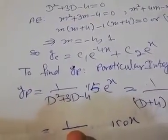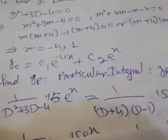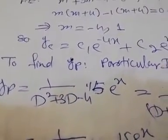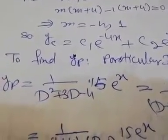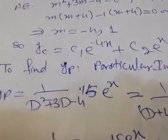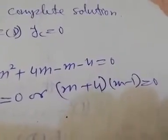For the particular integral with f(x) = 15·e^x, write 1/(D² + 3D - 4) times 15·e^x. Replacing D by 1 gives 1 + 3 - 4 = 0, so this is the failure case. Factorize f(D) as (D + 4)(D - 1), corresponding to the auxiliary equation factors (m + 4)(m - 1) = 0.